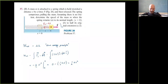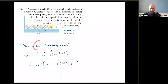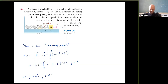Now we've found the net work. Next step: set it equal to the change in kinetic energy. ΔK = ½mv_final² - ½mv_initial². Since the mass starts at rest, v_initial = 0, so this whole expression is just ½mv_final². Therefore ½mv_final² = ½kx².